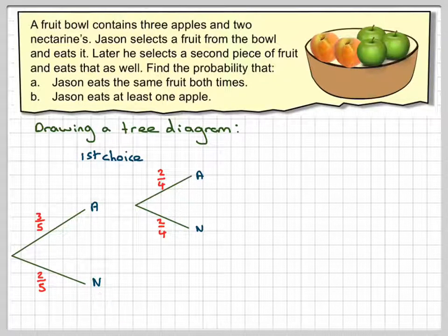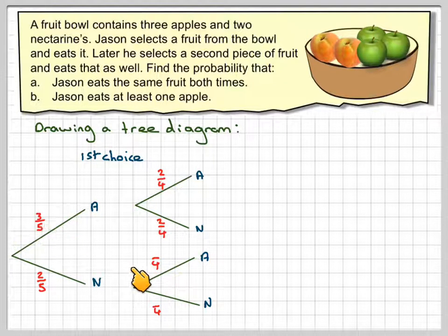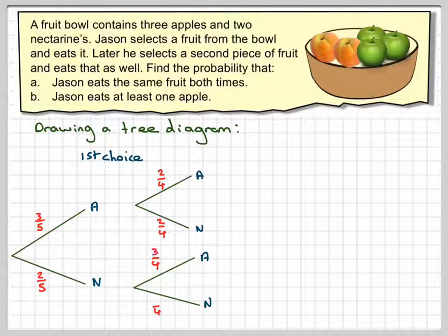Having had a nectarine the first time he could then eat an apple or nectarine. So there are only four pieces of fruit in the bowl. However, here there are still three apples and only one nectarine to choose from.